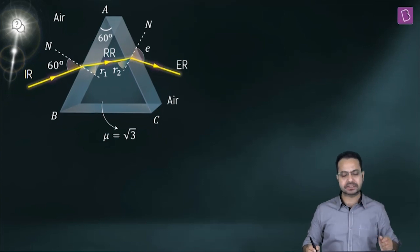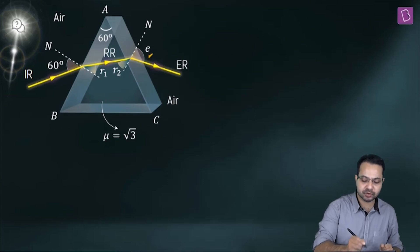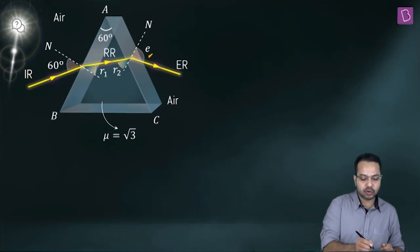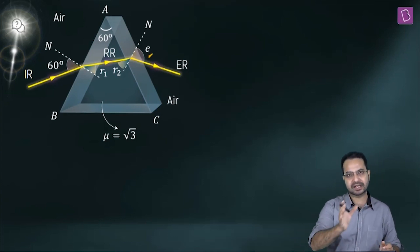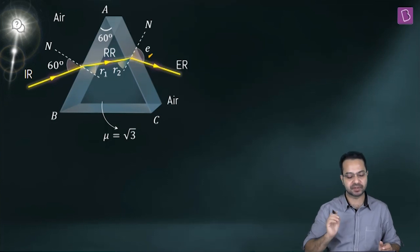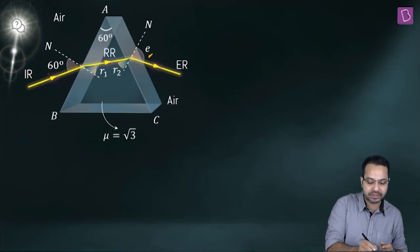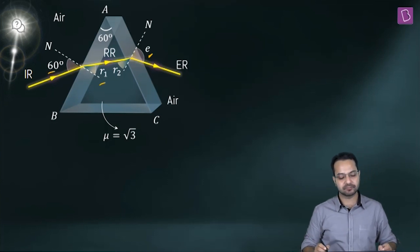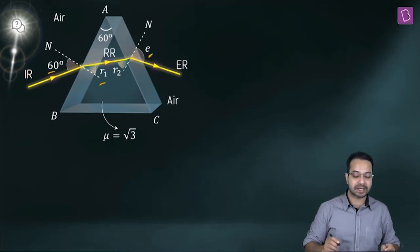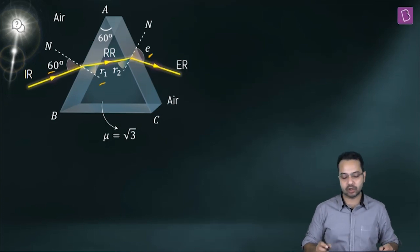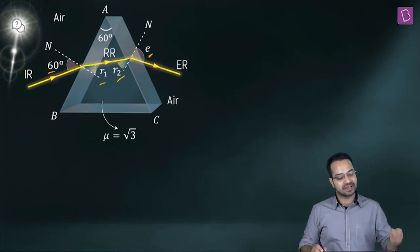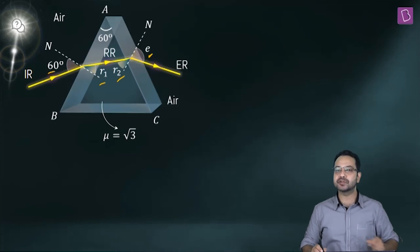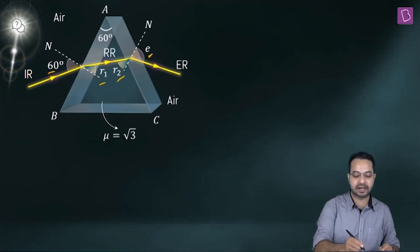The method: knowing the refractive index of air and prism and the angle of incidence, I can find R1 using Snell's law. Then using the relationship A = R1 + R2, I can find R2. Then applying Snell's law on the other surface, I can find e.